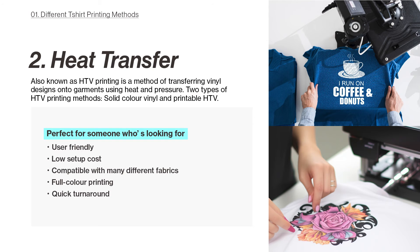Next is heat transfer, also known as HTV printing — a method of transferring vinyl designs onto fabrics using heat and pressure. It involves cutting designs or letters from vinyl sheets using a vinyl cutter, weeding out the excess vinyl, and then using a heat press to transfer the design onto fabrics. There are primarily two types: solid colour HTV and printable HTV. It's perfect for someone looking for something user friendly — easy to set up and execute, even for beginners. With the right tools and techniques, you can achieve consistent and professional results.